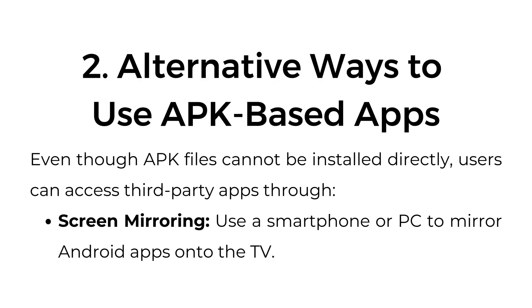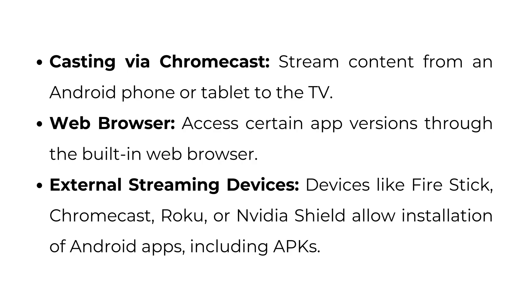Alternative ways to use APK-based apps: Even though APK files cannot be installed directly, users can access third-party apps through screen mirroring — use a smartphone or PC to mirror Android apps onto the TV. Casting via Chromecast allows streaming content from an Android phone or tablet to the TV. The web browser can be used to access certain app versions through the built-in web browser.